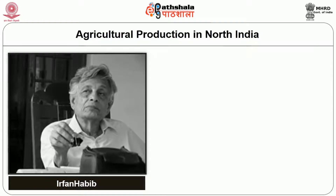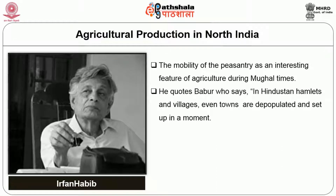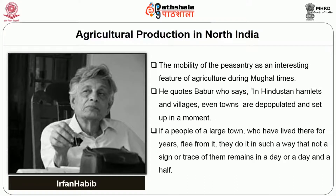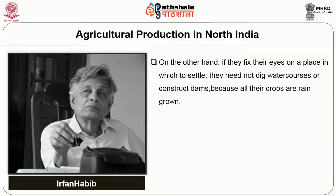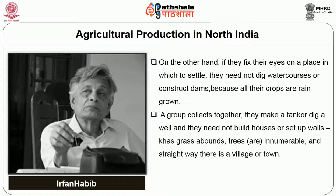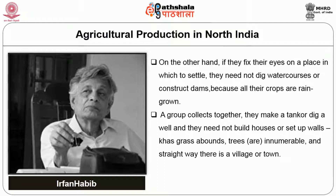Historians like Irfan Habib underline the mobility of the peasantry as an interesting feature of agriculture during Mughal times. Habib quotes Babur who says: 'In Hindustan, hamlets and villages, even towns, are depopulated and set up in a moment. If people of a large town flee from it, there is not a sign or trace of them within a day or a day and a half. On the other hand, if they fix their eyes on a place to settle, they need not dig water courses or construct dams because all their crops are rain-grown.' Abundance of land was another characteristic of the prevailing system of agricultural production.